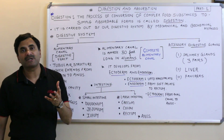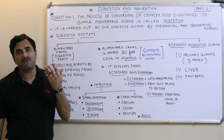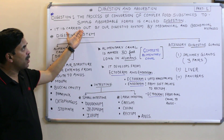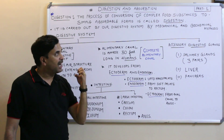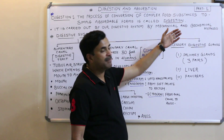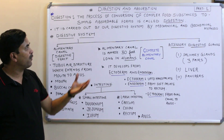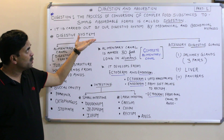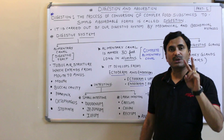Now the question arises: how in the process of digestion is complex food changed into simple form? The process of digestion is carried out by mechanical and biochemical methods. There are certain mechanical means as well as certain biochemical means found in our body which are responsible for this digestion.